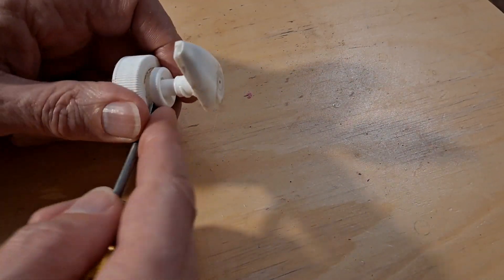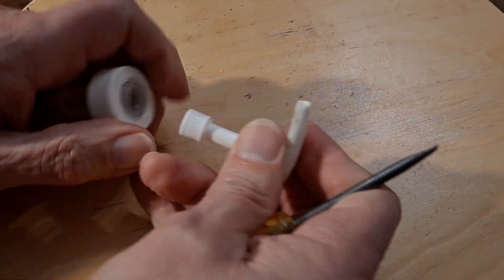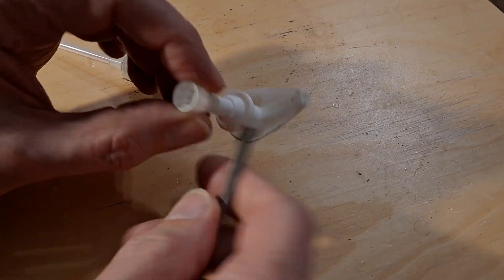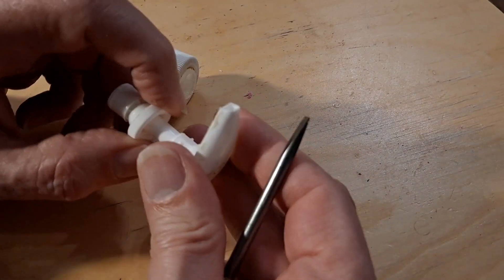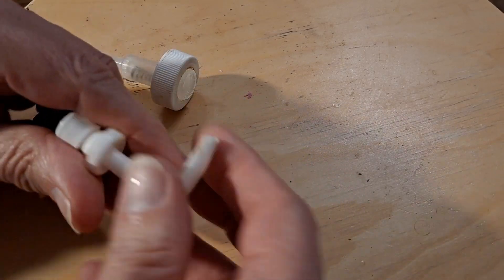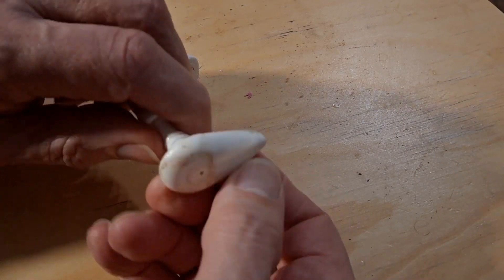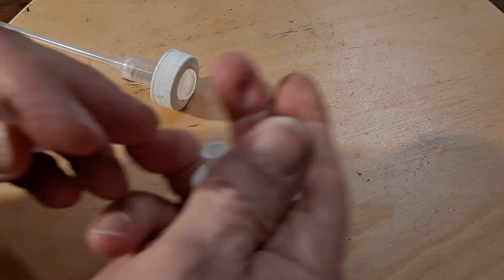This little bit just unclips. So there's our piston with a hole up the middle that goes round the corner and out there. I don't know if I can actually pull that apart. Should be able to. Yeah. There we go.